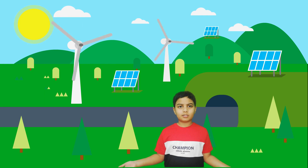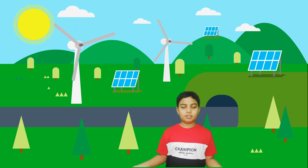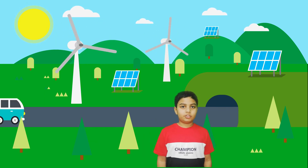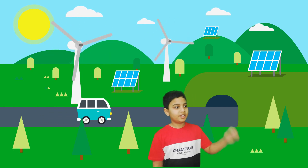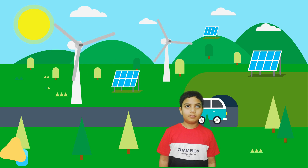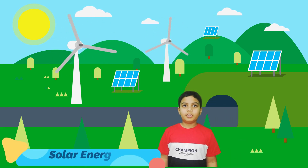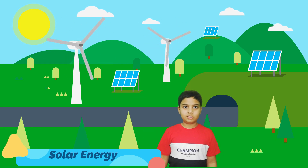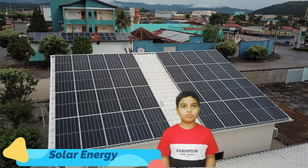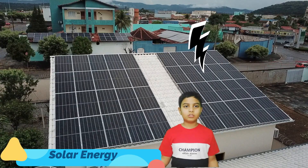But from where does energy come from? There are different sources of energy. Let's take a look at each one of them. First, let's talk about the Sun — the massive star in the sky. The Sun is the main source of energy on Earth. The solar energy given off by the Sun is taken by plants for photosynthesis, and it is also used in solar cookers to cook food.